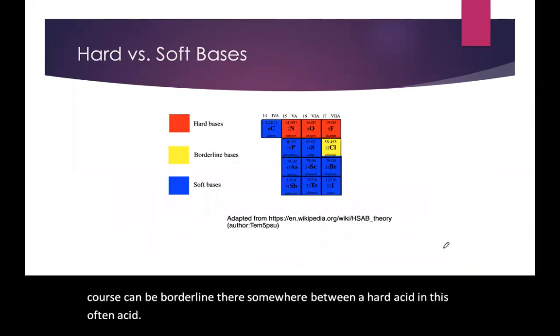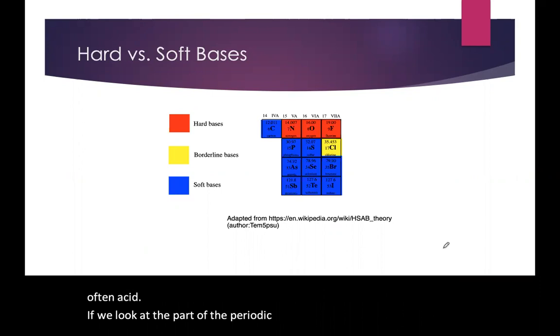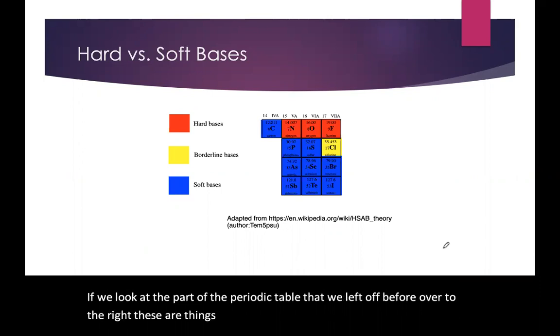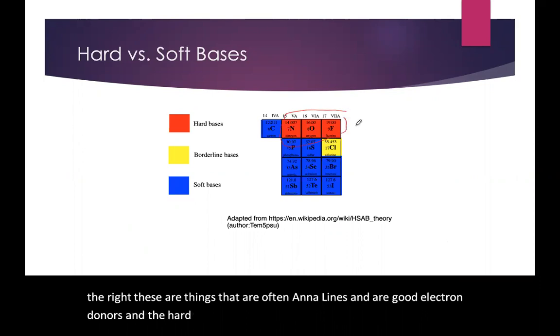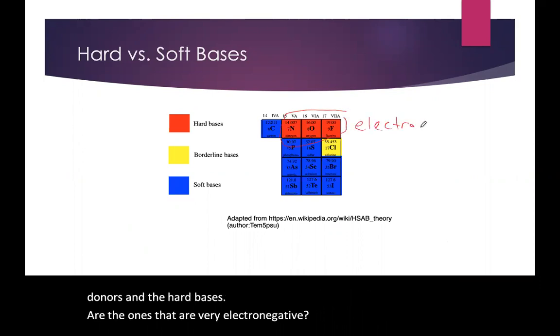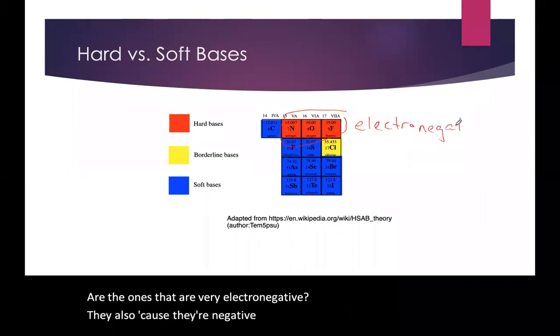If we look at the part of the periodic table that we left off before, over to the right, these are things that are often anions and are good electron donors. And the hard bases are the ones that are very electronegative. They also, because they're electronegative and hold their electrons tightly, they also tend to be small.